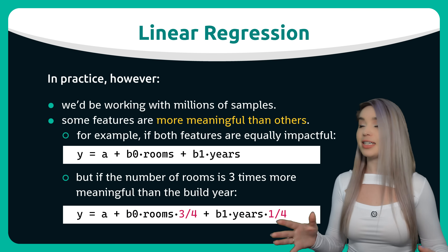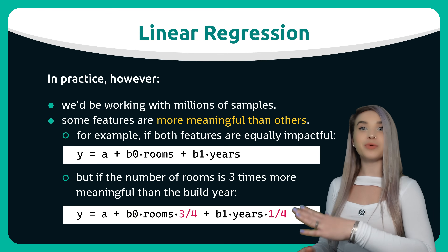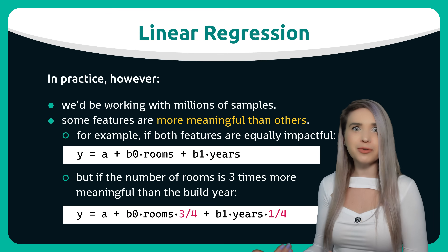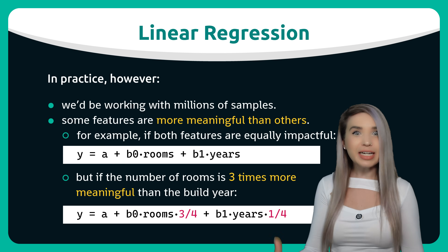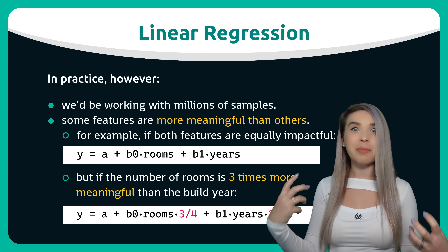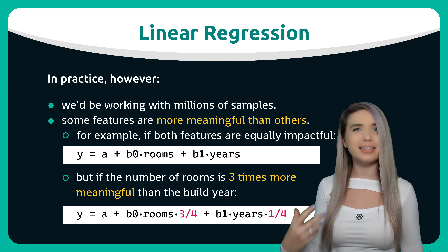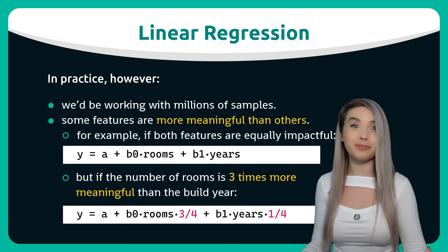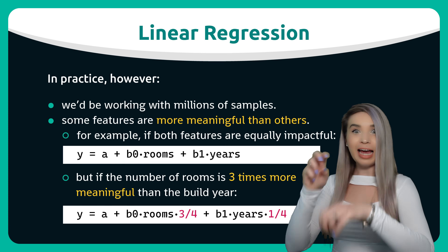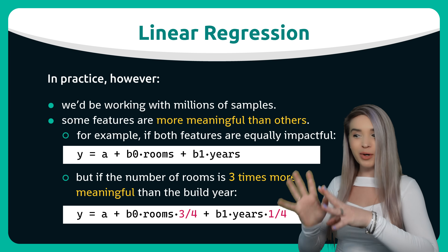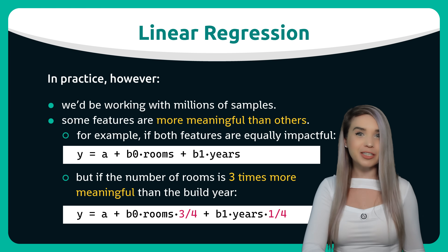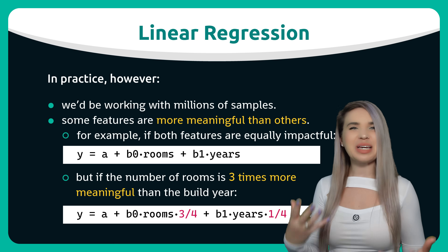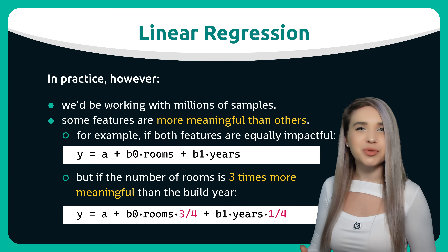Maybe if we load the rest of the data set, we will see that the number of rooms is three times more important than the year. And in that case, we will need to update our formula, adding a bunch of weights to our features. But how do we know what kind of weights to add?